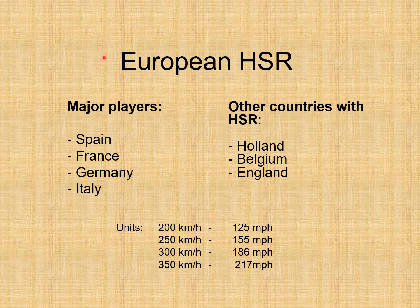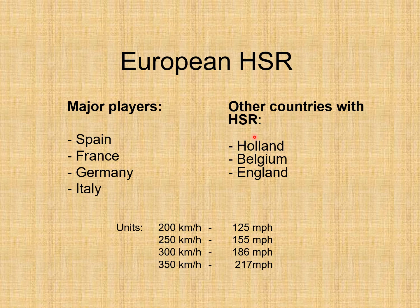European HSR (High-Speed Railway) major players are Spain, France, Germany, and Italy. Other countries with HSR include Holland, Belgium, and England. Speed tiers are 200, 250, 300, and 350 km/h.